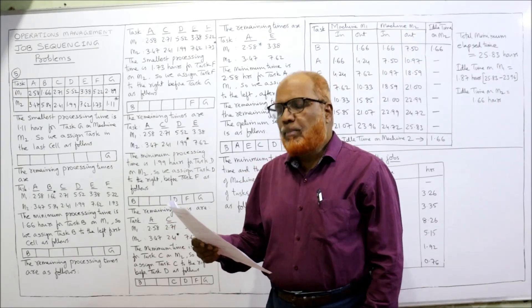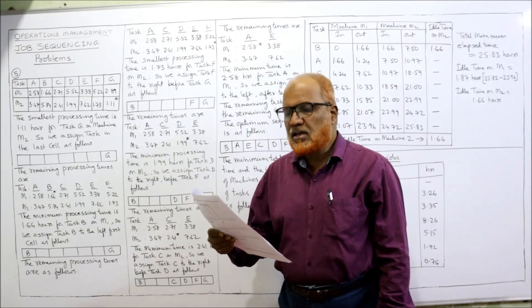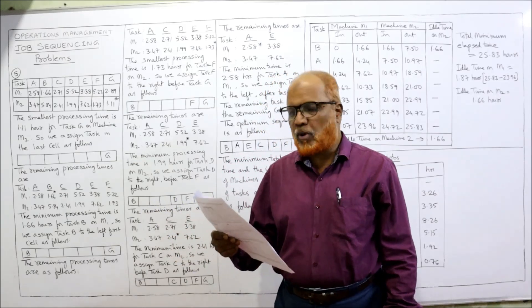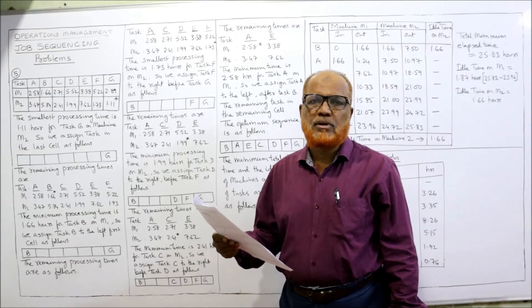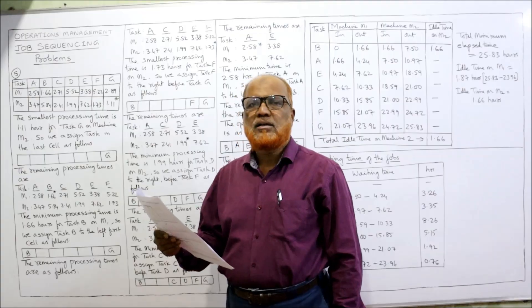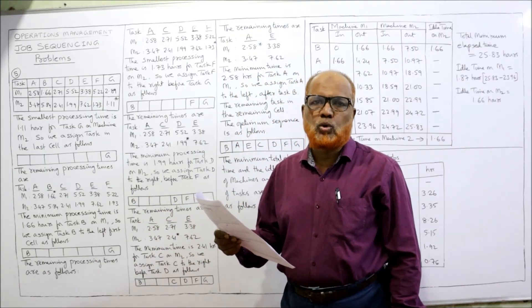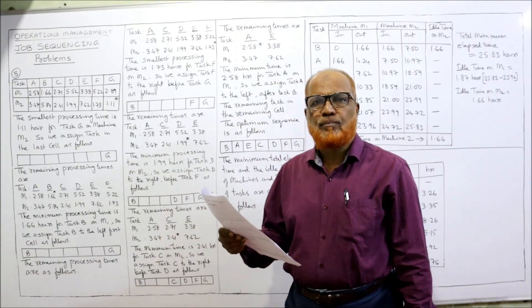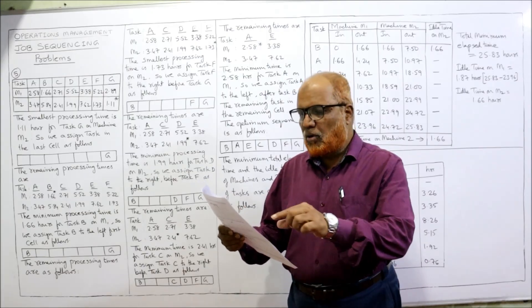In this problem, one more new point is added — it is asking you to calculate the waiting time of the jobs. The tasks (task means job) are A, B, C, D, E, F, G — totally seven jobs — each passing through two machines: first M1 and then M2.